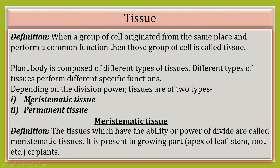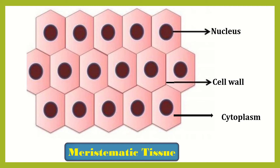Depending on the division power, tissues are of two types: number one, meristematic tissue, and number two, permanent tissue. The tissues which have the ability or power to divide are called meristematic tissues. It is present in the growing parts of plants — that means the apex of leaf, apex of stem, and apex of root.